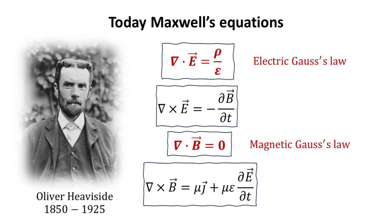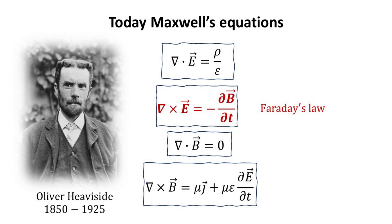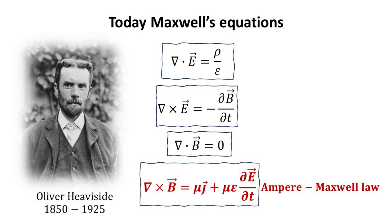We have the two Gauss's Laws, which state that the divergence of the electric field is related to its charge density, while the magnetic field is always divergence-free. We have Faraday's Law, which describes how a changing magnetic field can induce a circulating electric field around a closed loop. Lastly, the Ampere-Maxwell Law states that the total magnetic field circulation around a closed loop is proportional to the sum of the conduction current and the displacement current.